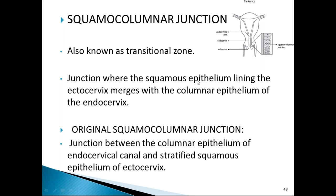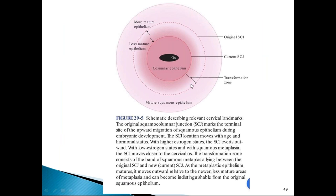The squamocolumnar junction (SCJ) is where the squamous epithelium of the ectocervix merges with the columnar epithelium of the endocervix. The original SCJ is this primary junction. After puberty, due to estrogen influence and acidic pH, the columnar cells undergo squamous metaplasia, creating a new squamocolumnar junction. The original SCJ is shown by the dotted line, the new SCJ is the current junction, and the metaplastic area between them is called the transformation zone.